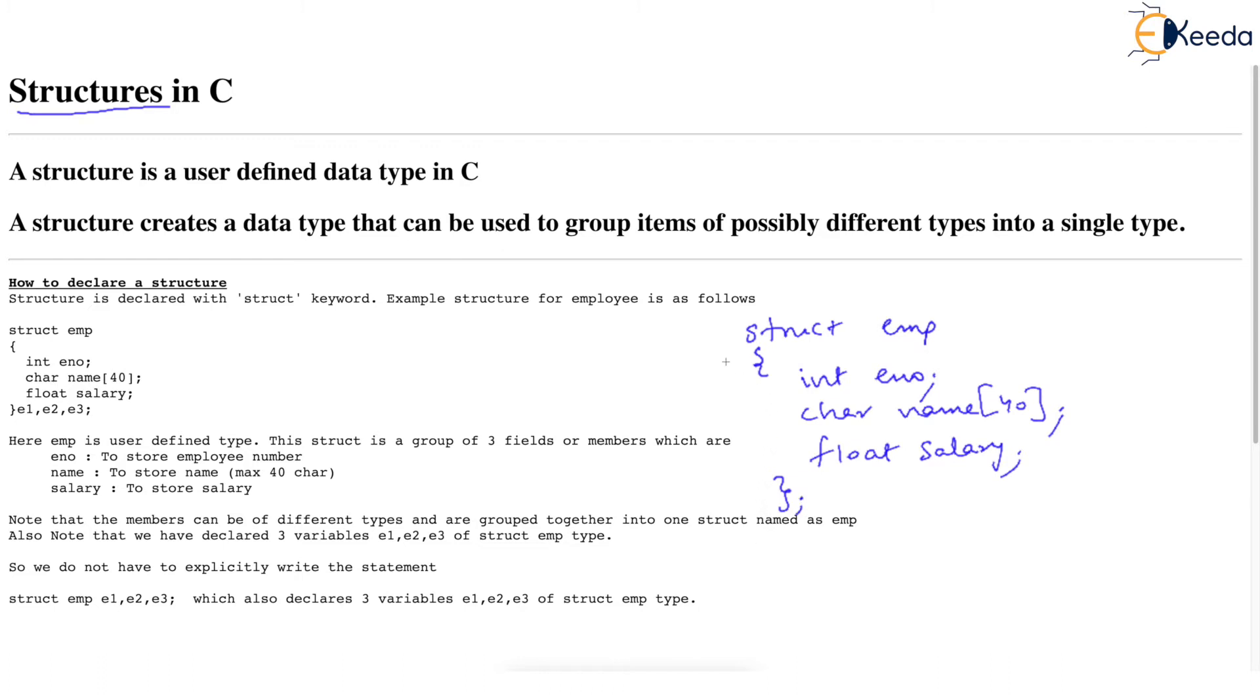What we saw is declaring this structure is not enough because this only creates a user defined data type. So you need to create variables of this type and the variables were declared by writing this line struct EMP E1, E2, E3.